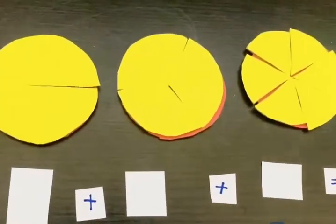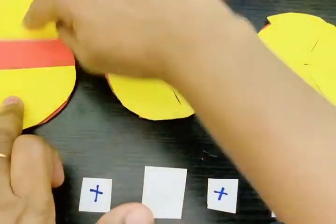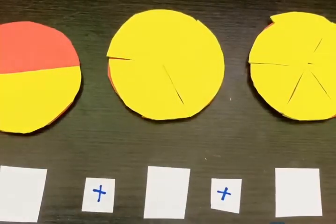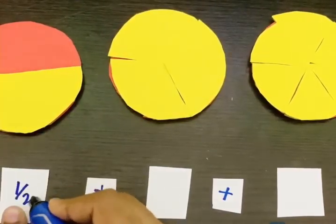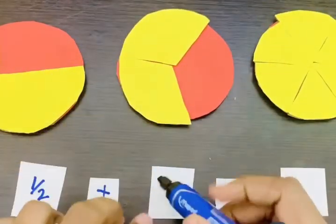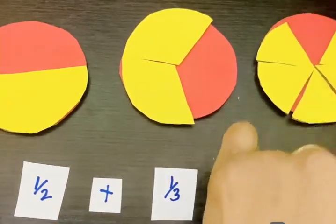Next, we try using three fractions with different denominators: 1 by 2, plus 1 by 3, plus 1 by 6.